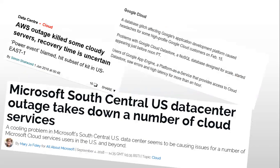Cloud outages are quite common. In June 2018, AWS US-East-1 data centers were down due to a power lightning strike, and some hosts could not be recovered. Google Cloud also experienced database glitches. Environments must be configured so that if one data center is down, resources in other regions can process requests and handle user load.